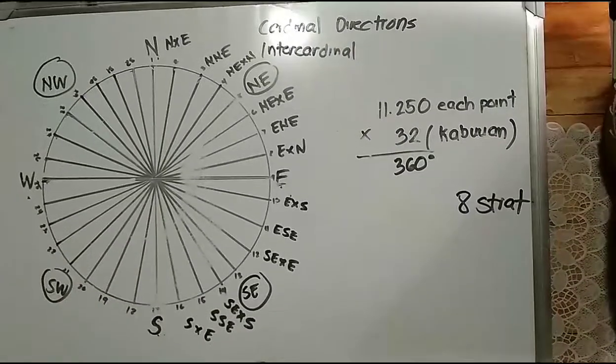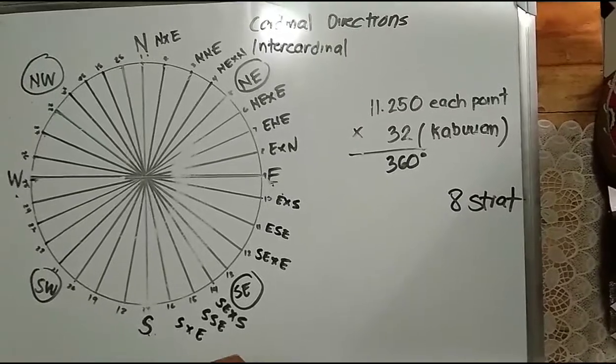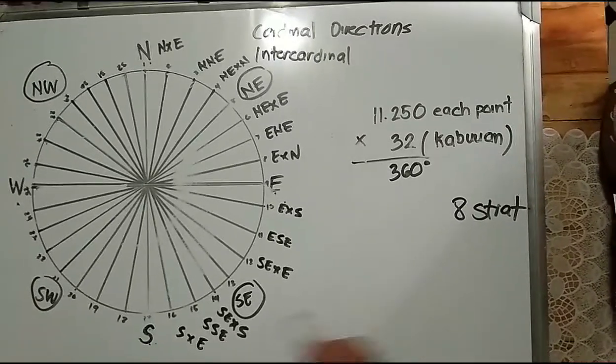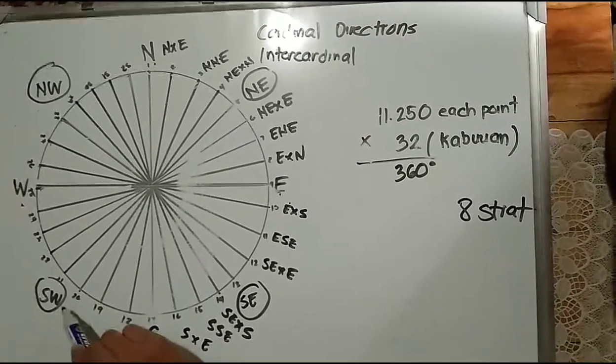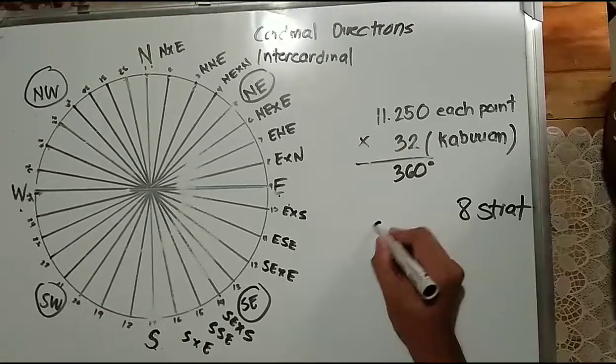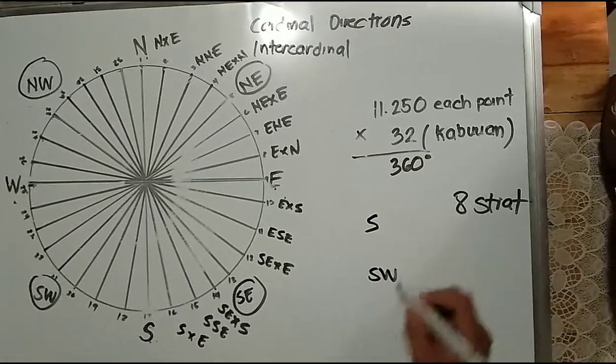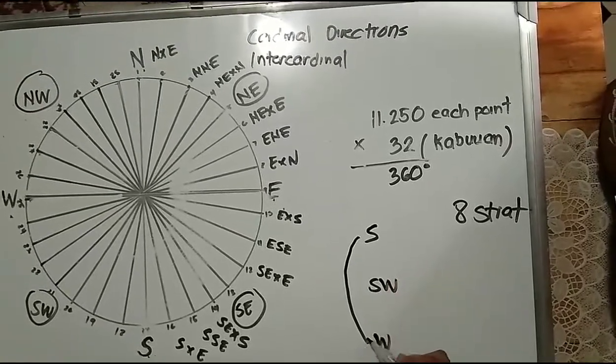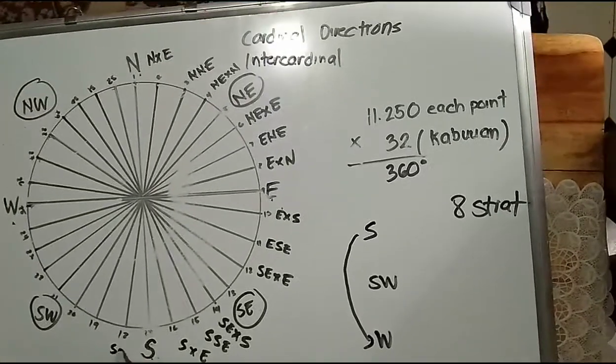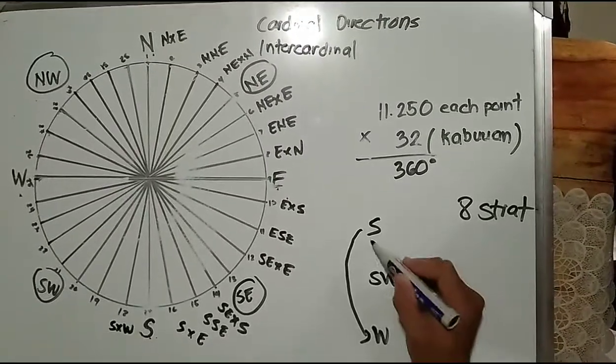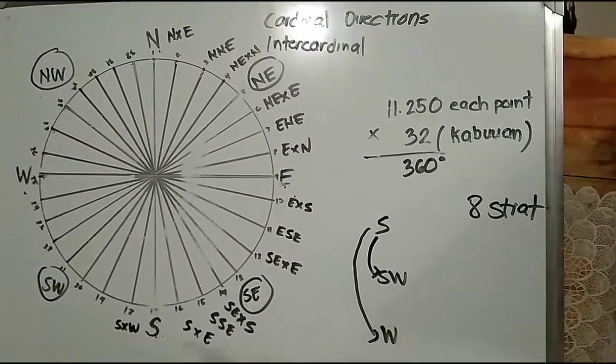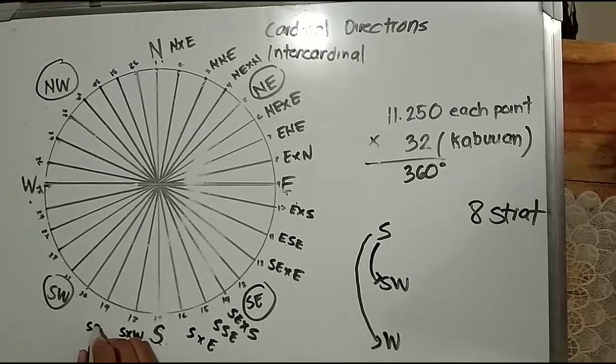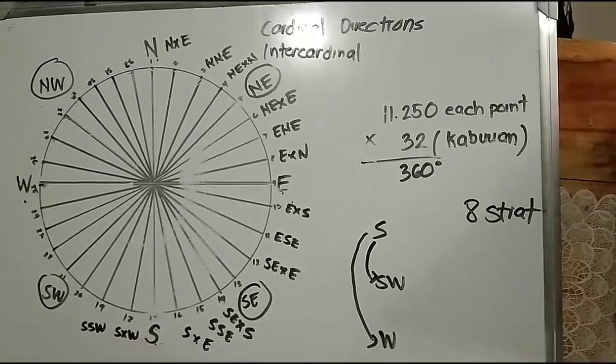Let's proceed to the third quadrant. Let's put the three: south, southwest and west. First step is the same: south by west. Second: south southwest. Third: southwest by south.